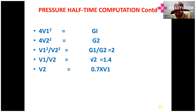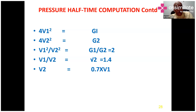A pressure half-time of more than 220 gives you a mitral orifice area of more than one centimeter squared. A mitral valve area of less than one centimeter squared requires treatment. Usually you can use medical treatment initially by slowing down the heart rate using beta blockers.